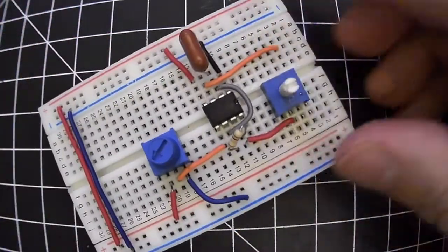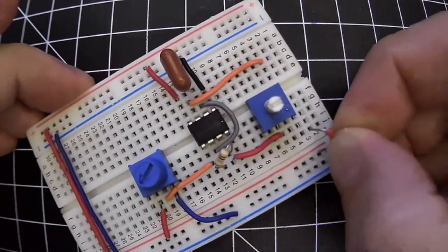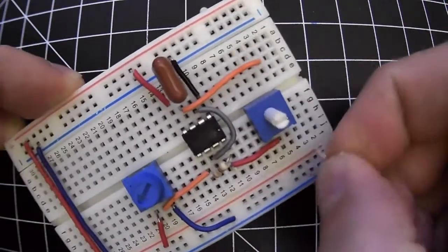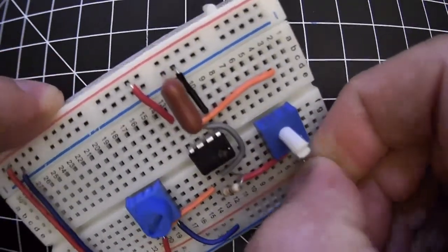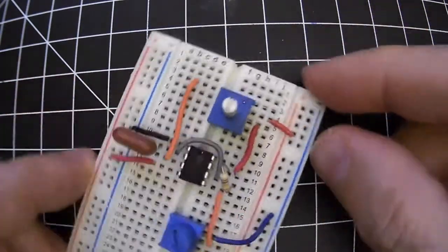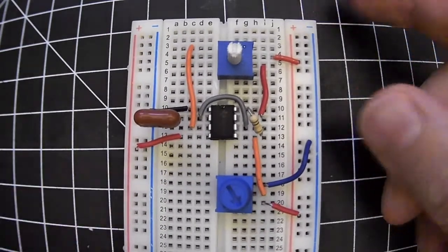I'm picking the middle, the wiper. And then out of the other leg directly to plus. So now I've got a variable resistor between pin 7 and plus.